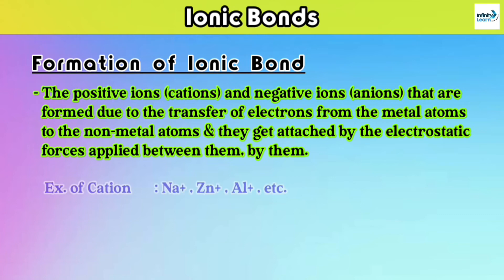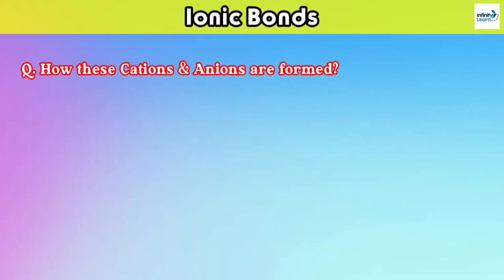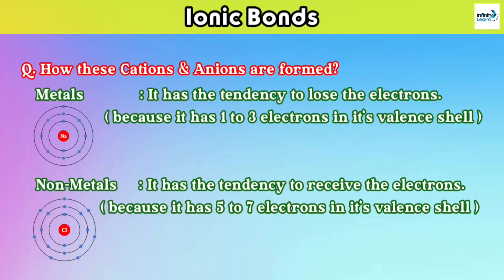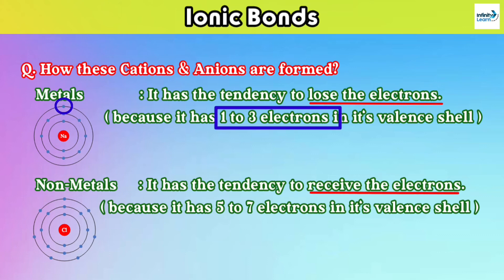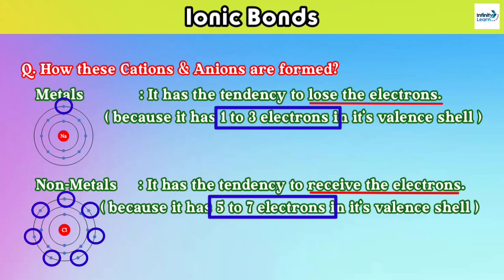Examples of cations include Na⁺, Zn²⁺, Al³⁺, etc. — atoms that are positively charged. Examples of anions include negatively charged ions like Cl⁻ and F⁻. Metals have the tendency to lose electrons and non-metals have the tendency to receive electrons, because metals generally have one, two, or three electrons in their outermost orbitals, while non-metals generally have five to seven electrons in their outermost orbitals.